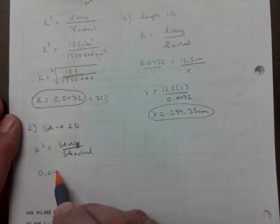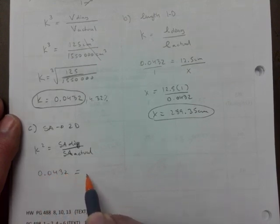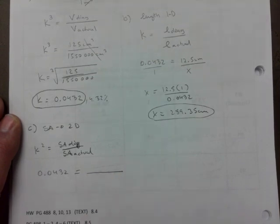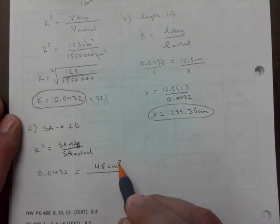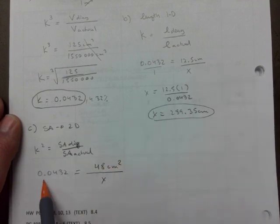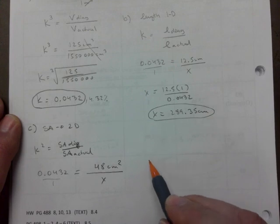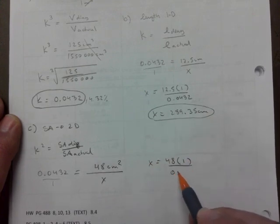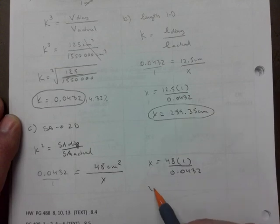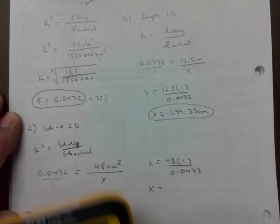My scale factor is still the same as before. Surface area of diagram is 48 cm², and this is my unknown. Put the one under there, so x equals 48 times 1 divided by that scale factor.